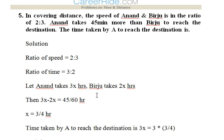Fifth question: in covering a distance, the speed of Anand and Birju is in the ratio 2:3. Anand takes 45 minutes more than Birju to reach the destination. Find the time taken by Anand to reach the destination. The ratio of speed between Anand and Birju is 2:3. As discussed earlier, the ratio of speed can be inverted to find the ratio of time, since speed is inversely proportional to time. So the ratio of time would be 3:2.